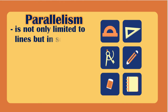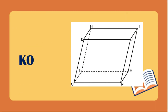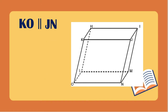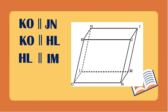Parallelism is not only limited to lines but to segments as well. The two segments are parallel if and only if the lines containing them are also parallel. Using this figure, segment KO is parallel to segment JN, segment KO is also parallel to segment HL, segment HL is parallel to segment IM, and segment IM is parallel to segment JN.